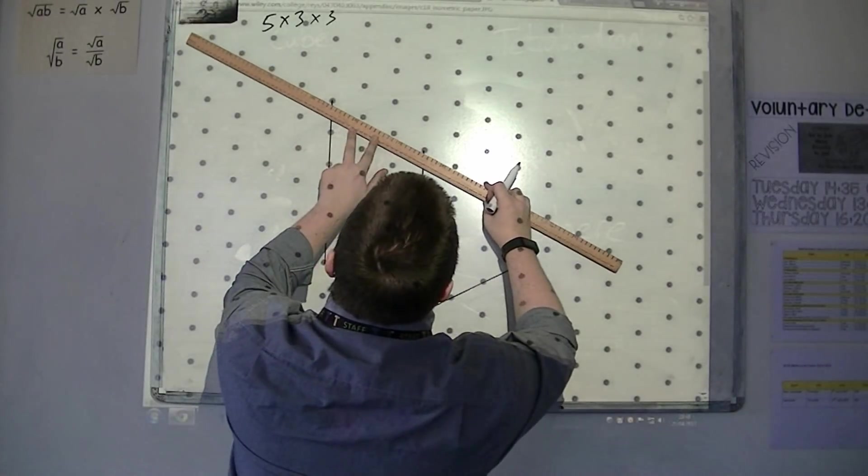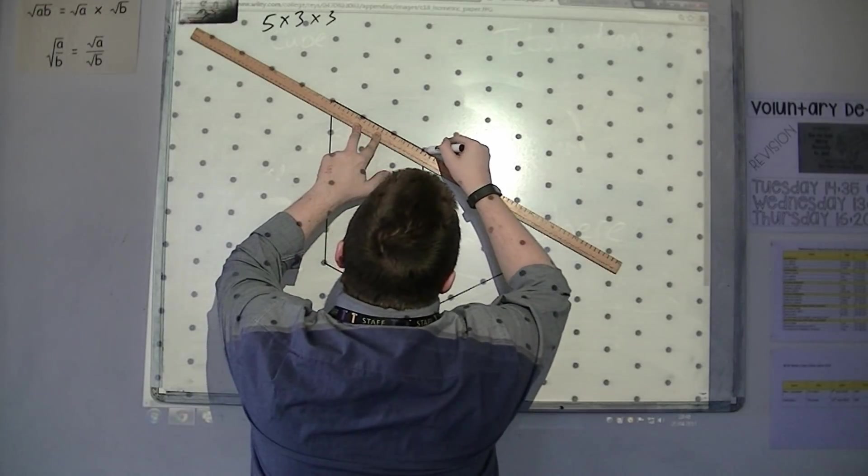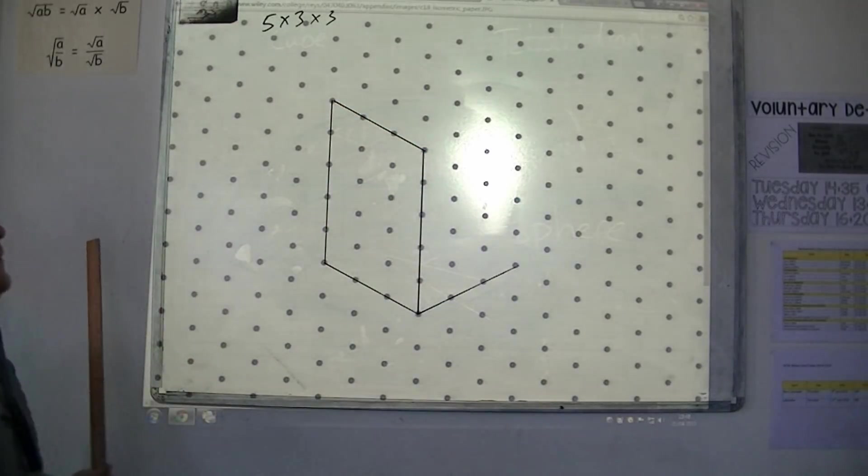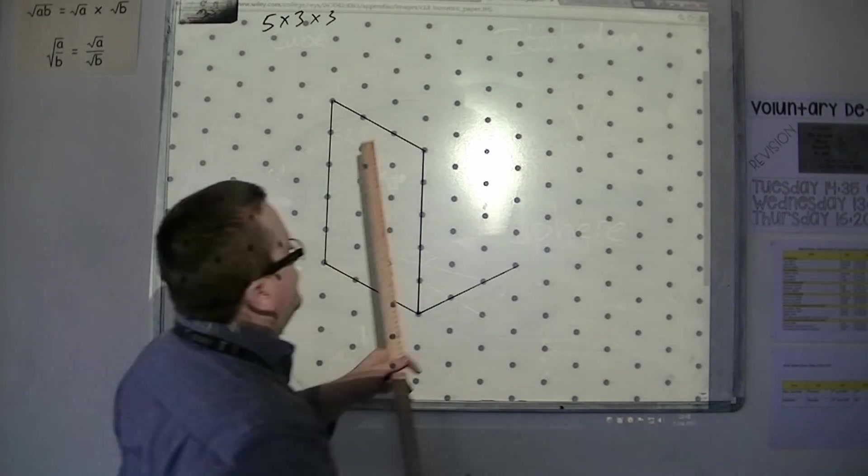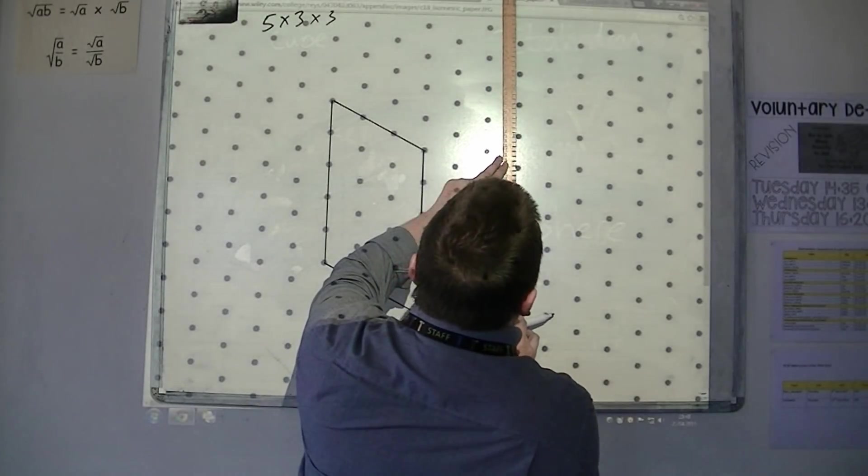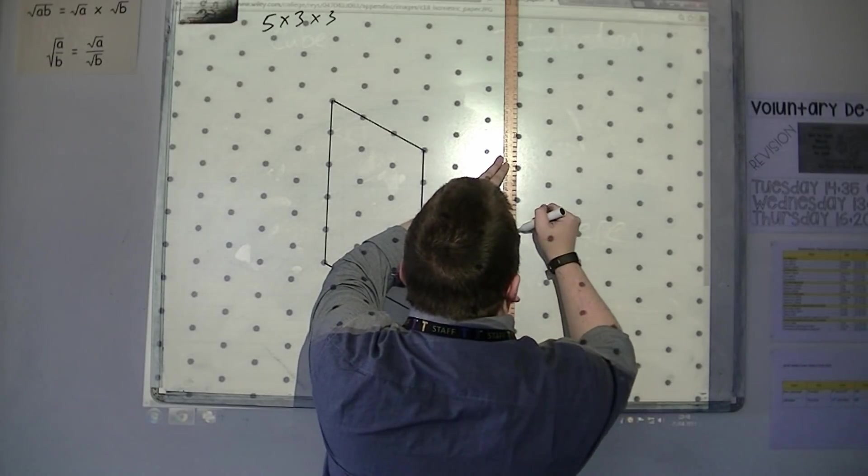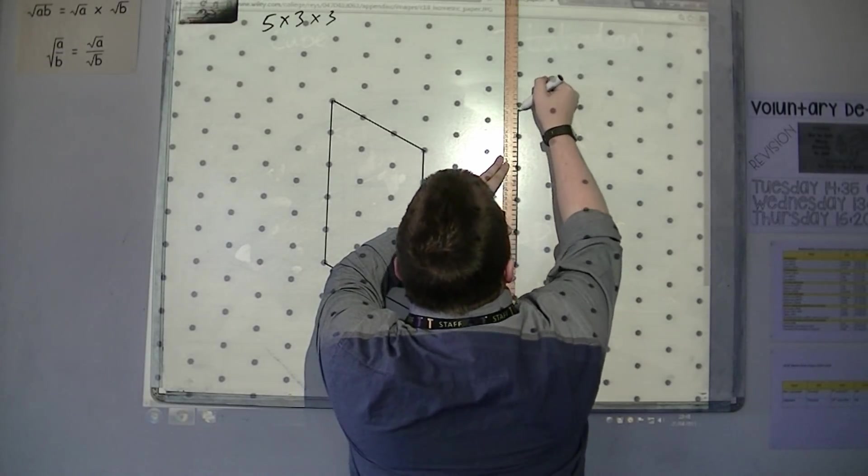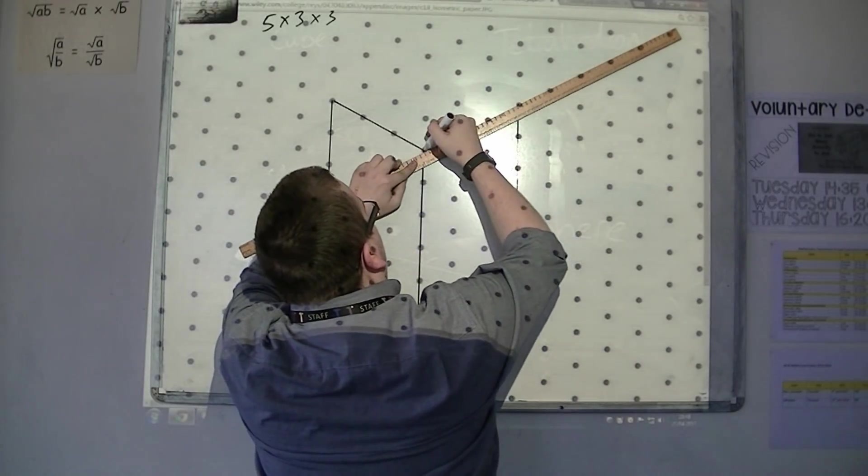And then, you can draw in the top edge. So that's one of the sides of my shape. 5 high from that point as well. So, 1, 2, 3, 4, 5. Draw in that top edge.